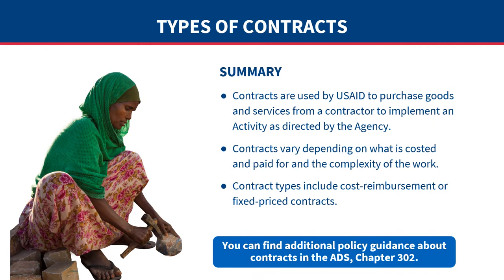To summarize, contracts are used by USAID to purchase goods and services from a contractor to implement an activity as directed by the agency. Contracts vary depending on what is costed and paid for and the complexity of the work, and they can be cost reimbursement or fixed price contracts. You can find additional policy guidance in ADS Chapter 302.